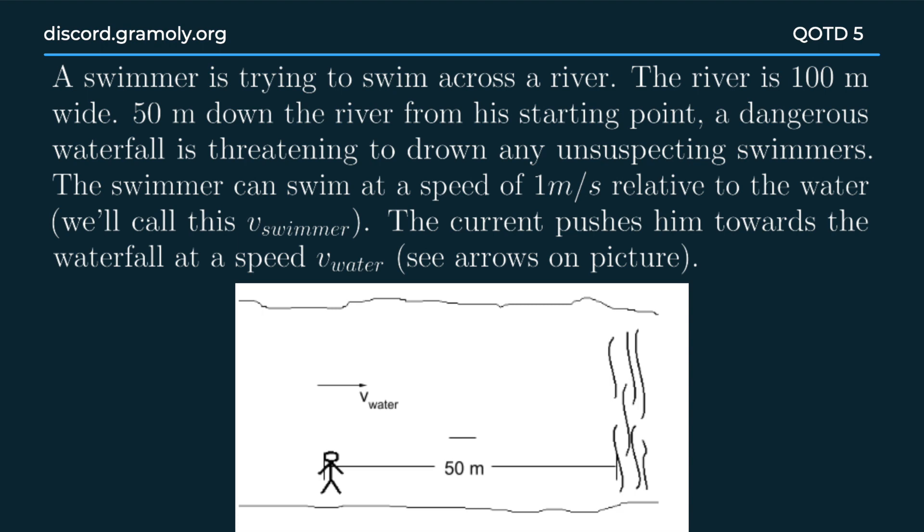The swimmer can swim at a speed of 1 meter per second relative to the water, which we'll refer to as v_swimmer. The current pushes him towards the waterfall at a speed v_water, as depicted by the arrows in the figure.